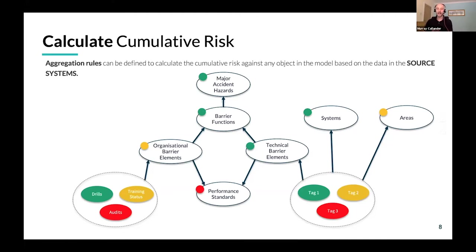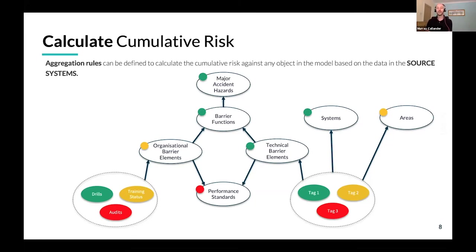The power of the data model is that we can calculate cumulative risk and define rules that let us aggregate status in different directions. We have two different sources of data for two different types of barrier element: technical barriers, such as safety valves and trips, and organizational barriers, which are about the people and processes in your organization that prevent bad things happening. We can aggregate the scores in different directions — for example, towards a performance standard, or through barrier functions up to major accident hazards, or just to the physical areas on the platform.